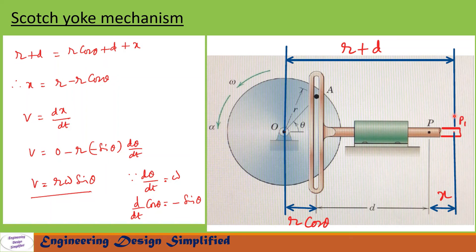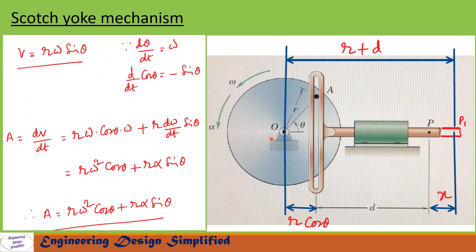When the slider moves towards the left, the velocity is negative, so we can simply put a negative sign in front of this equation. To find the acceleration of point P on this slider, we need to differentiate the velocity equation with respect to time. So acceleration = dv/dt.